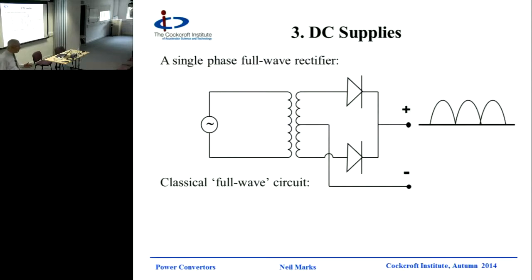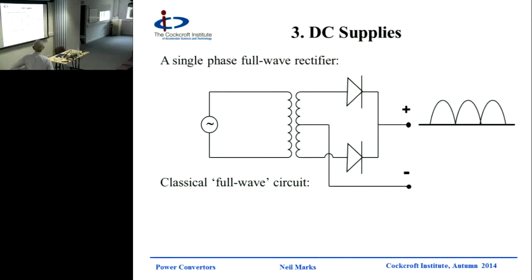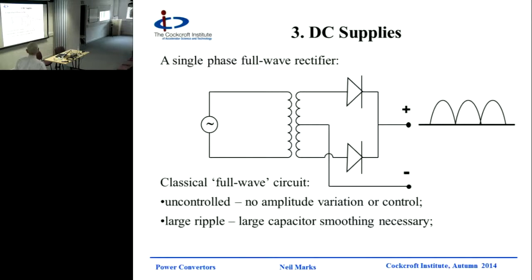DC supplies - starting very simple and going to the complicated. So everybody's seen this: there's an AC feed, it goes to a transformer, there's a centre tap, a diode in each direction, giving positive and negative output. You look at the volts - they go bump, bump, bump at each half sine wave. Classical full wave circuit. If you only had one of these diodes it would only be a half wave circuit. All uncontrolled - we're not controlling the amplitude in any way, all we can do is turn it on and off. Large ripple - look at that, it's 100% ripple. A large capacitor would be needed to smooth it. It's really only suitable for small loads, like keeping your homemade radio operational.